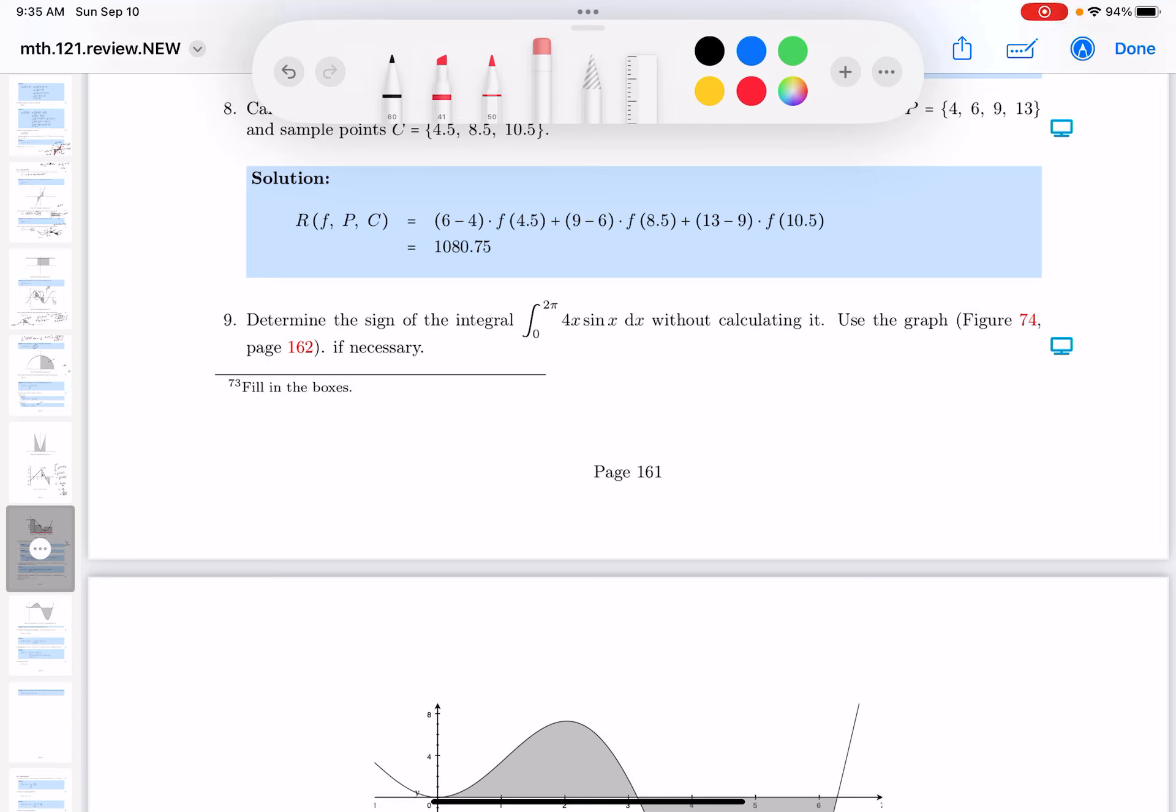Be very careful in reading something because you may misunderstand the question and start doing work that you're not expected to do. What they want to do is determine the sign of this. It's either going to be positive, negative, or possibly unsigned at zero.